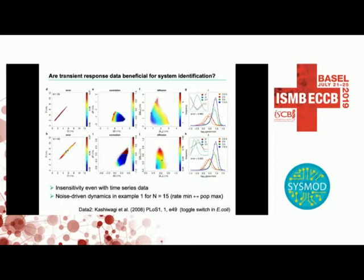Our proposal is that time series identification using time series data helps identification — you get better parameters identified. We tried this with a time series but found that it's no improvement, more or less. But we found what is a classical noise-driven state in the PLOS ONE publication — a population maximum at low noise states where the rates are low.